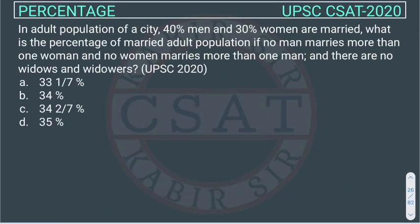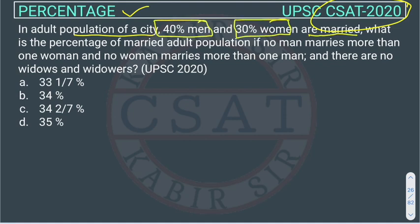This is a question from the percentage section. This question was asked in UPSC CSAT 2020. In the adult population of a city, 40% of men and 30% of women are married.